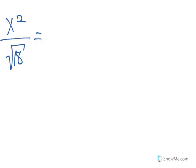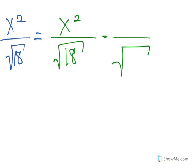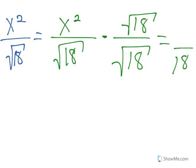For the next example, we can do it in two different ways. The first way is to multiply the numerator and denominator by square root of 18, just like we did before. By doing so, we get the square root of 18 times x squared over 18. However, this is not completely simplified yet.